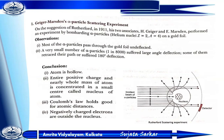On the suggestion of Rutherford, his two associates — Geiger and Marsden — performed the experiment by bombarding alpha particles on a gold foil. The observation is: most of the alpha particles passed through the gold foil undeflected. A very small number of alpha particles suffered a large angle of deflection, and some of them retraced their path.